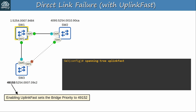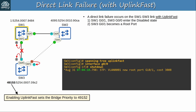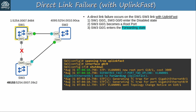UplinkFast's goal is to allow the switch's uplink to the root bridge to recover quickly after a failure — it's designed for switches that aren't the root bridge. I once again simulated a failure on the SW1–SW3 link by shutting down SW3 G0/0. SW1 G0/1 and SW3 G0/0 enter the disabled state, and SW3 G0/1 becomes a root port. Here's where UplinkFast changes things: SW3 G0/1 then enters the forwarding state immediately. At the same millisecond that it becomes a root port, it enters the forwarding state — the debug log says 'UplinkFast' in brackets. With less than one second of downtime, SW3 now has a functioning uplink — a root port toward the root bridge. UplinkFast helps a switch recover from a direct link failure by immediately transitioning a non-designated port to the root role in the forwarding state.